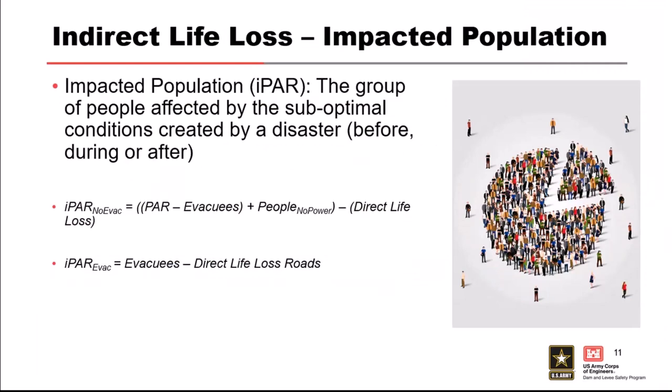Impacted population, or IPAR, is the group of people affected by the suboptimal conditions created by a disaster before, during, or after. For the non-evacuees group, we're saying population at risk less the number of people who evacuate — because we don't want to double count — plus people with no power, less direct life loss so we don't kill the same person twice. For the evacuees IPAR, it's much easier: just the number of people who evacuate less life loss on roads.